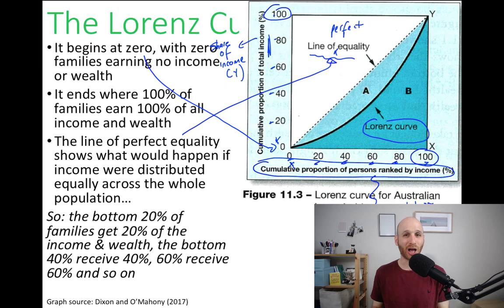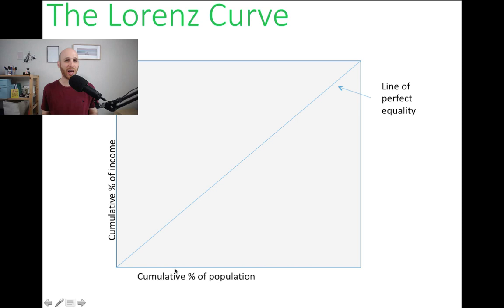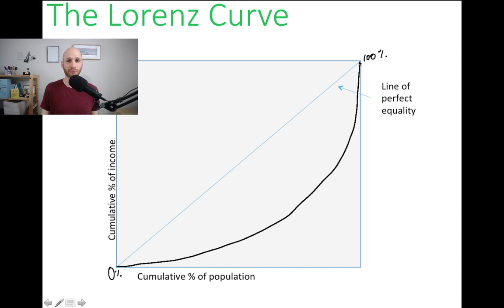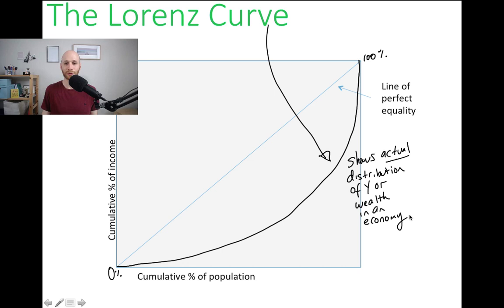But we know that in society, things are not always equal or even close to being equal. In reality, our distribution is not the same as perfect equality — it looks something more like the Lorenz curve itself, which shows the actual distribution of income (remember the symbol Y) or wealth in an economy, compared to that line of perfect equality.